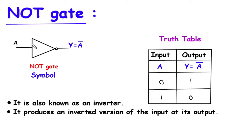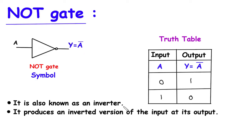NOT gate. This is the symbol for NOT gate. NOT gate has only one input and only one output. Here we can see Y is equal to A bar, where A bar is the complement of A. It is also known as an inverter — NOT gate is also called an inverter.